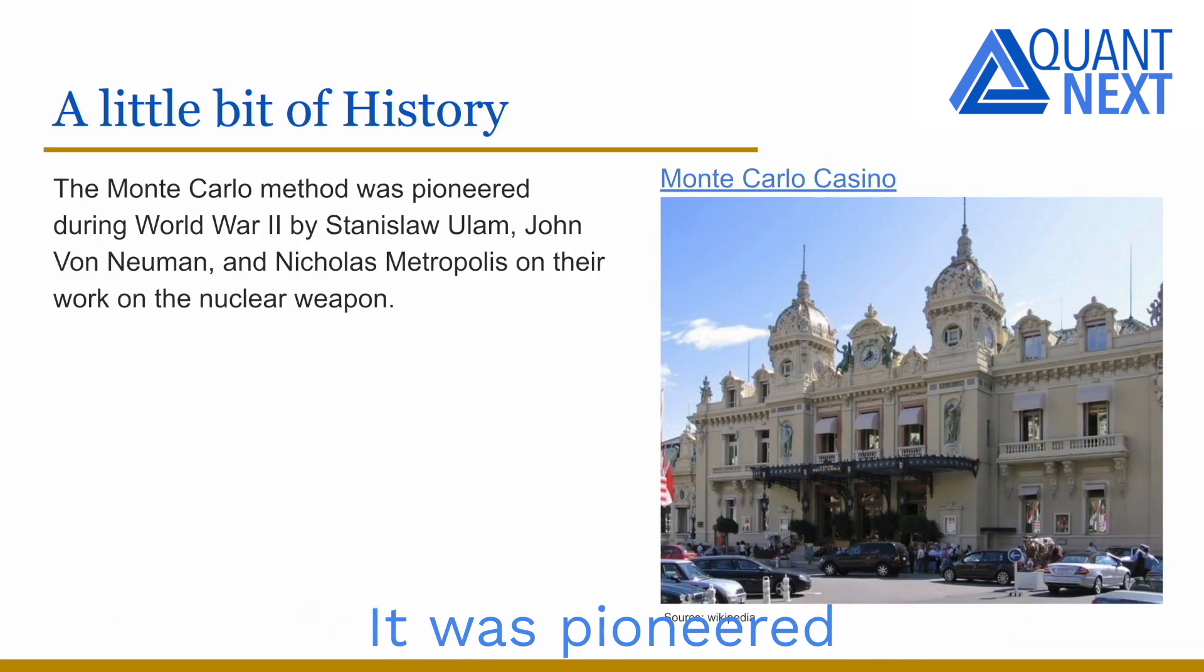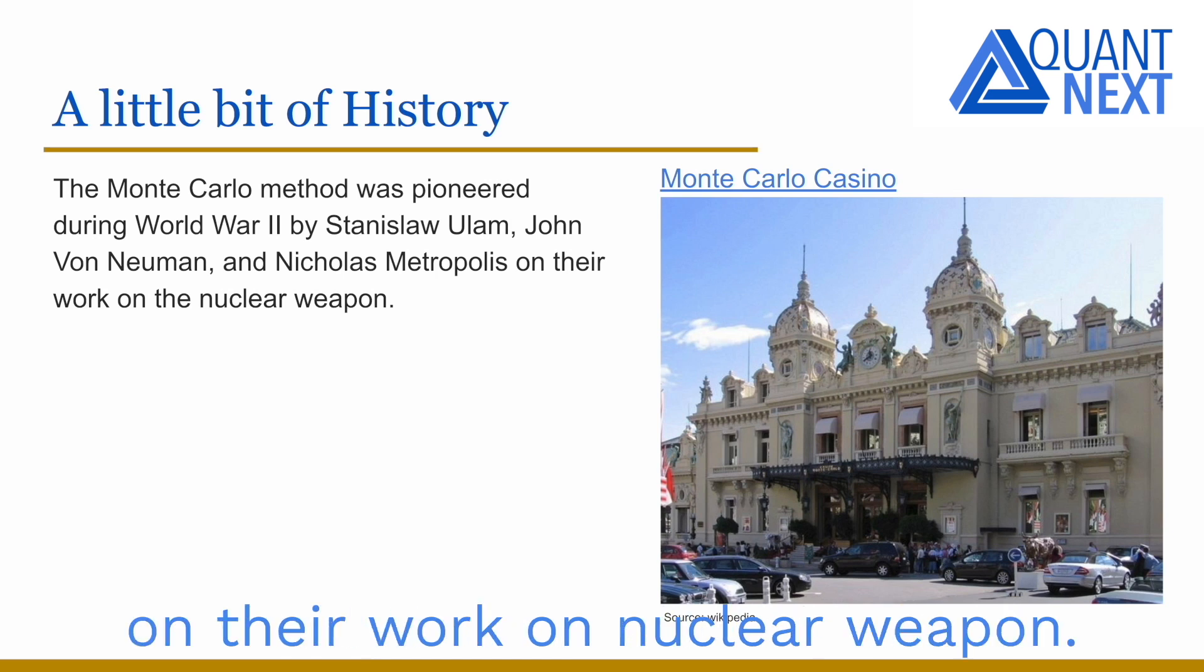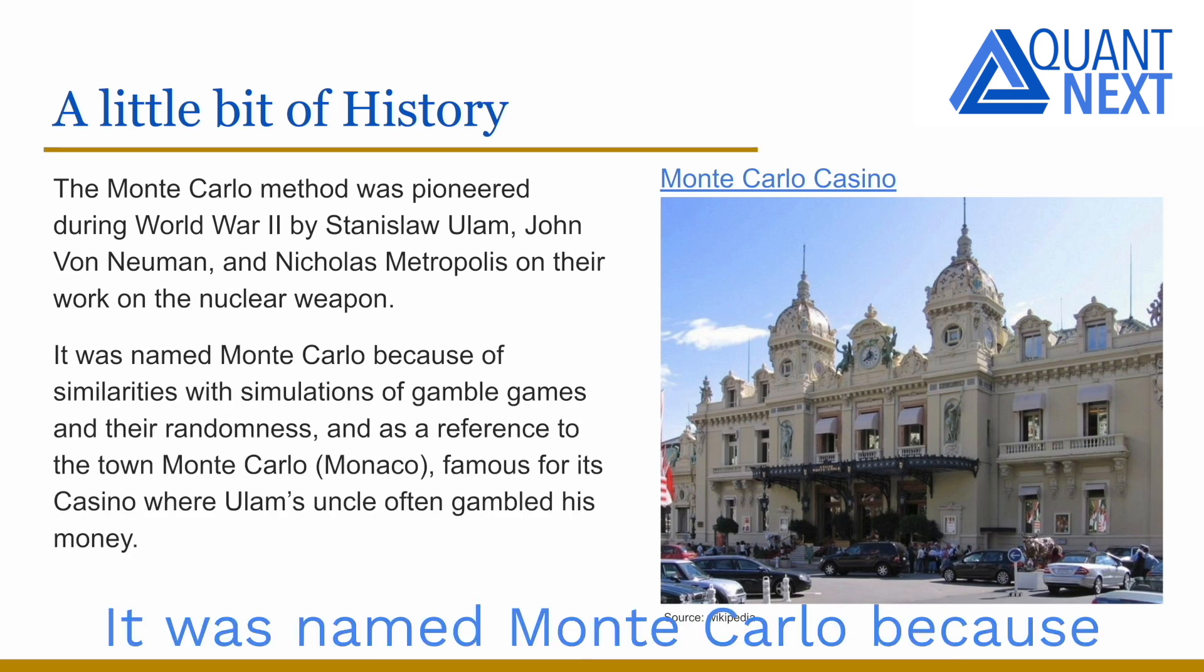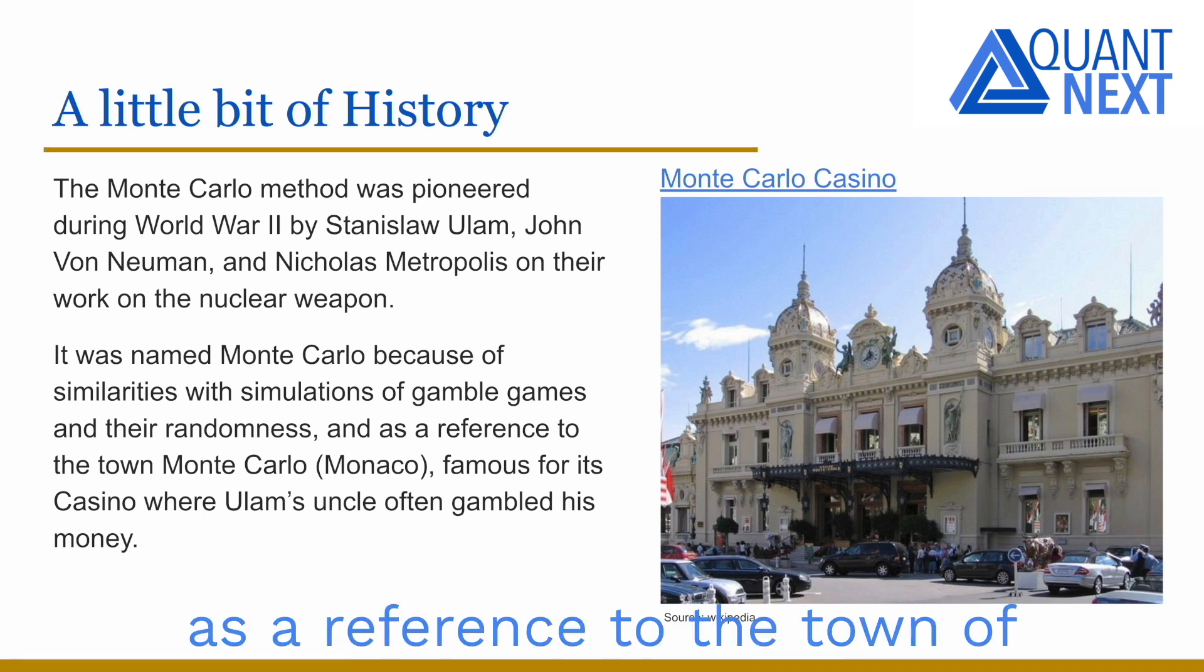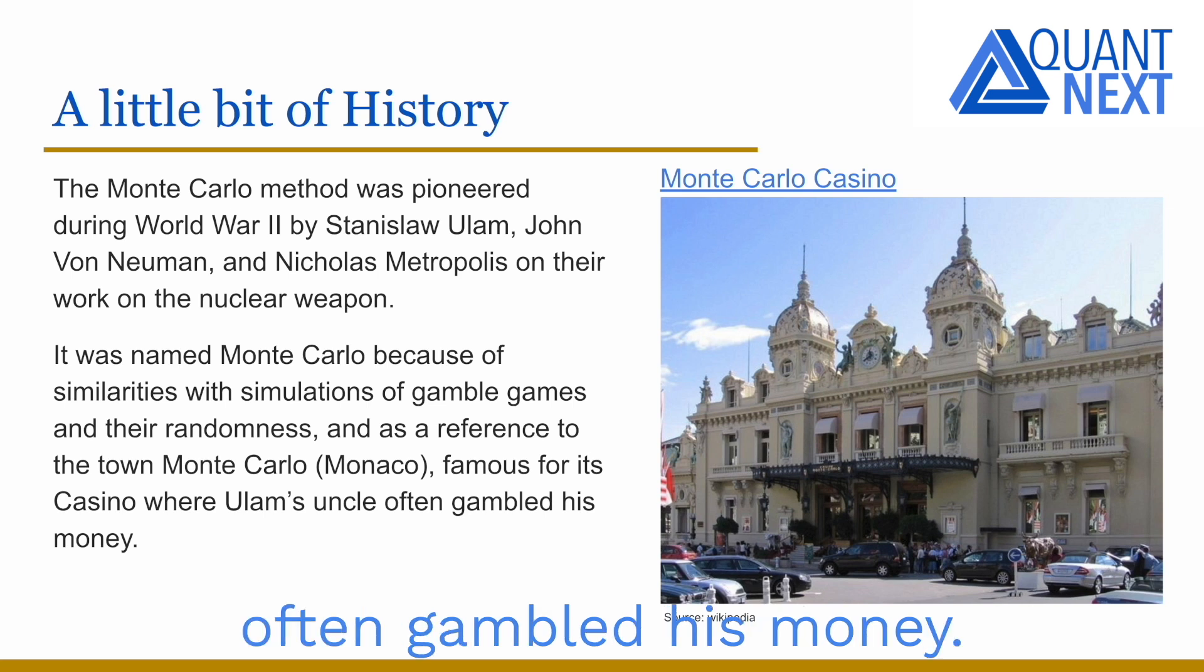It was pioneered during World War II by Stanislaw Ullam, John von Neumann and Nicolas Metropolis on their work on nuclear weapons. It was named Monte Carlo because of similarities with simulations of gamble games and their randomness as a reference to the town Monte Carlo in Monaco, famous for its casino where Ullam's uncle often gambled his money.